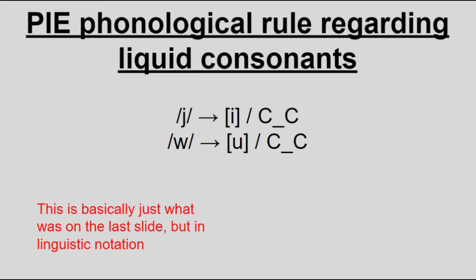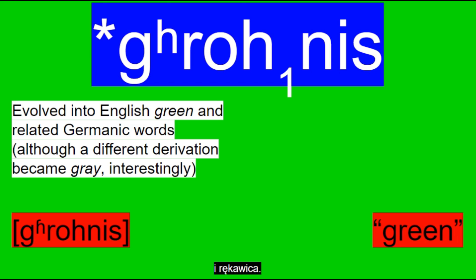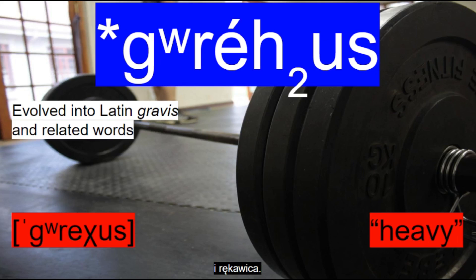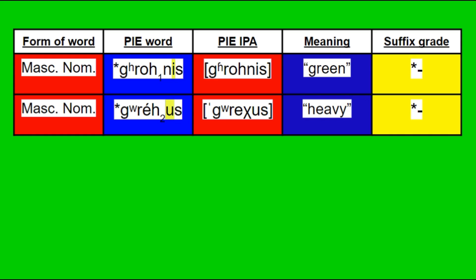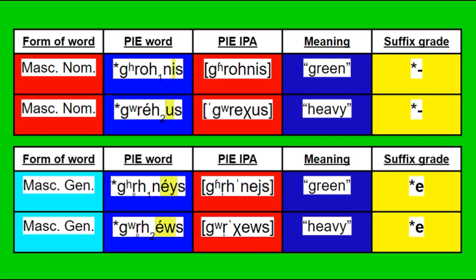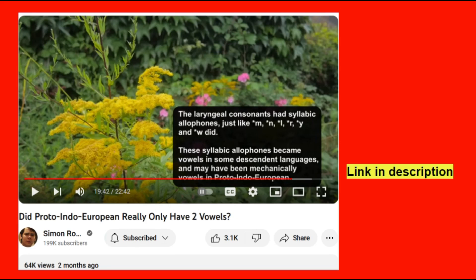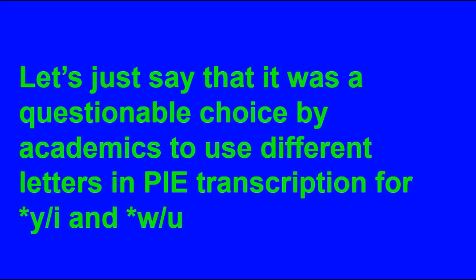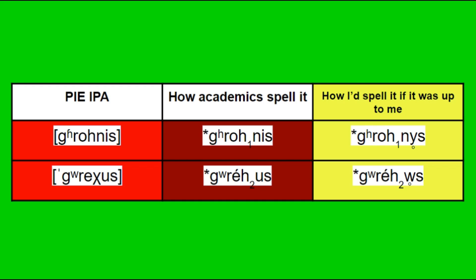So for example, there were PIE adjectives like *grohnis, which probably meant plant-colored, and *grehus, a word for heavy, both masculine nominative. For those words, we would say the suffix has a zero grade. It becomes more apparent in certain other forms of the adjectives, like the masculine genitive forms *grhnis and *grehus, where the suffixes are now stressed and in the e grade. Simon Roper also mentioned this in a video — the whole i and u thing in PIE is purely academic. If PIE speakers had their own writing system, those words would most likely be spelled *grohnis and *grehus to represent their phonemic values, making them syllabic consonants no different from r.